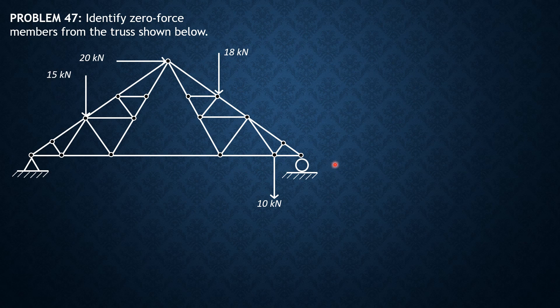We cannot find a joint where there are only two meeting members or two forces. Looking at the supports, there are two members, but remember there are reaction components here and also one vertical reaction here. So there is no Case 1 for this situation. But for Case 2, there are many.